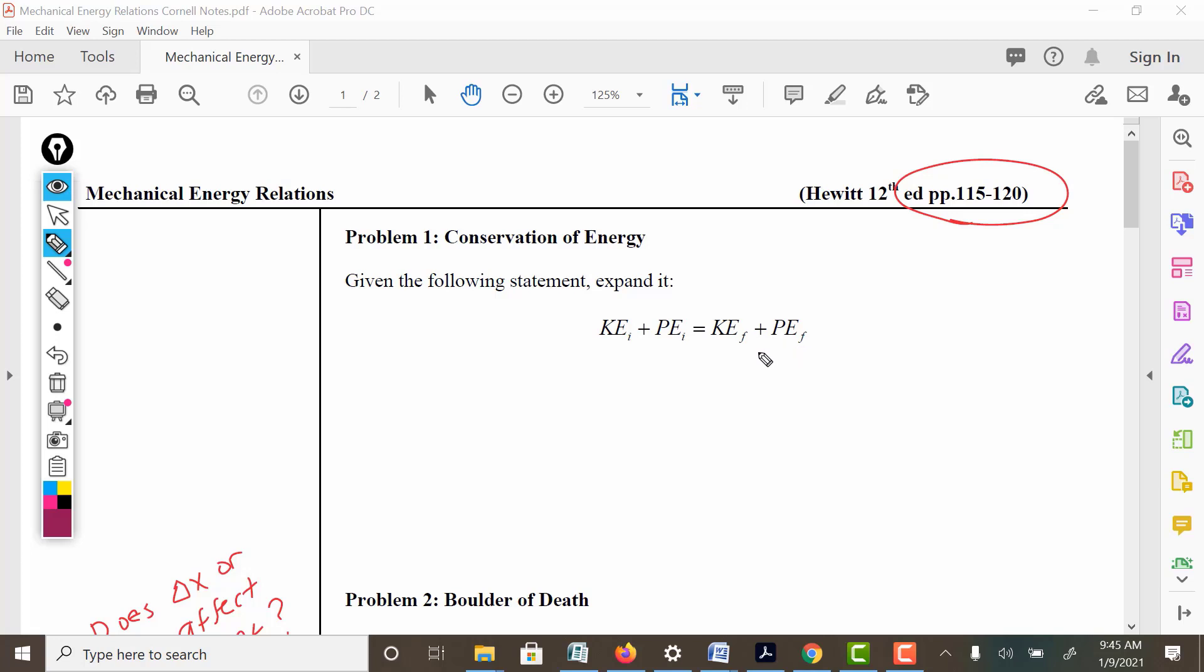The initial kinetic energy plus the initial potential energy is the final kinetic energy plus the final potential energy. Now, sometimes this can be reduced. So for example, what if we start from rest? Well, that means if we start from rest, that means our velocity is zero to begin with, and so our kinetic energy will be zero. And then this will just become PE initial is equal to KE final plus PE final. Notice that the mass is the same. We're assuming that this object going down the hill would keep the same mass.